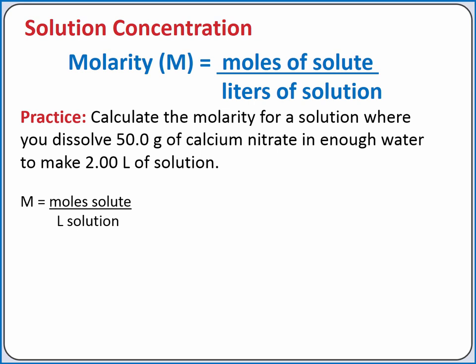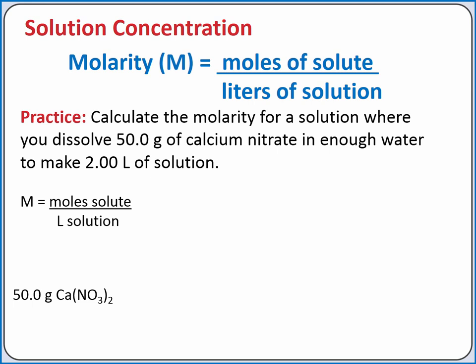We'll start with our equation for molarity. In the problem, we're given grams of calcium nitrate, which is our solute, so we need to convert from grams to moles. Using dimensional analysis, 50 grams of calcium nitrate is converted into moles using its molar mass, which is 161.1 grams calcium nitrate per one mole.